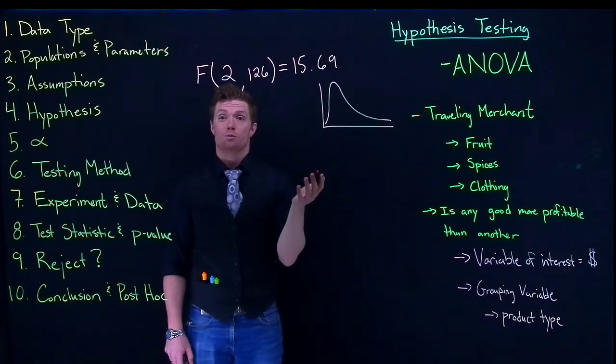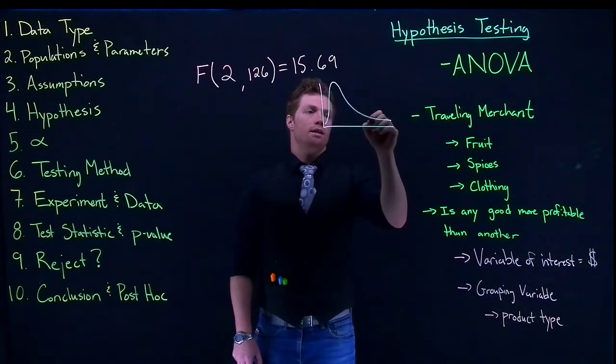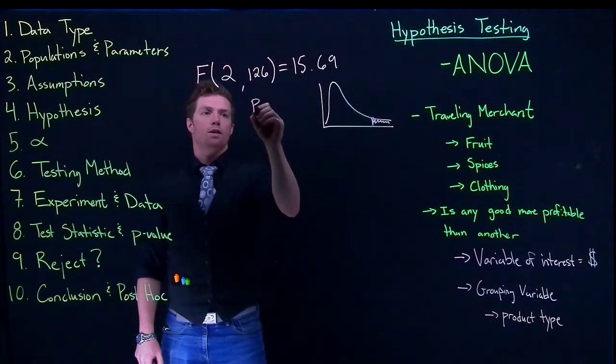That's kind of what the F distribution looks like. So this 15 means that we're just kind of going out here to 15 and then we find the area under the curve for a specific p-value.